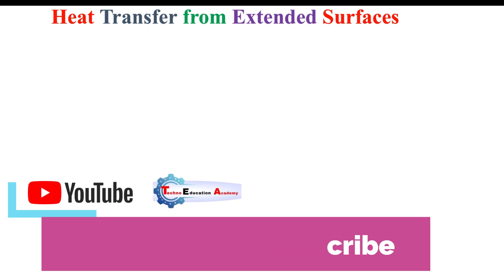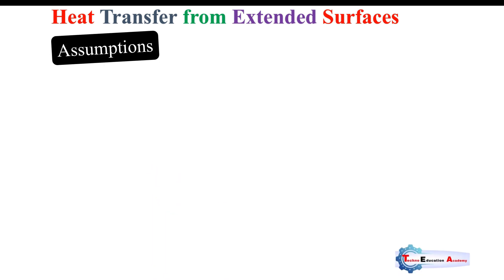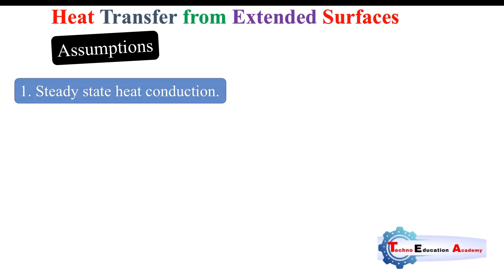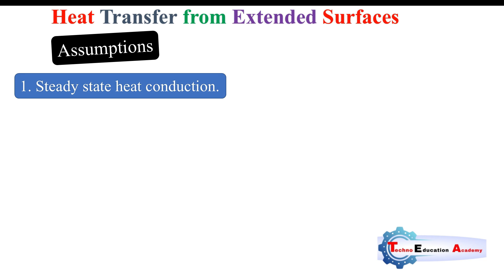The mathematical analysis for finding out the temperature distribution and heat flow from different types of fins deals with the following assumptions. These assumptions are made for the analysis of heat flow through the fin. The first assumption is steady-state heat conduction — conduction takes place at steady state.